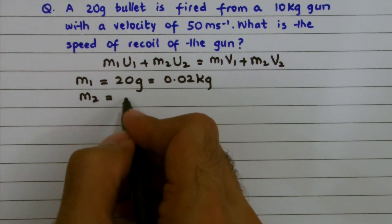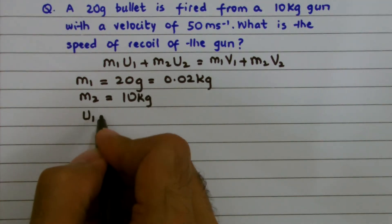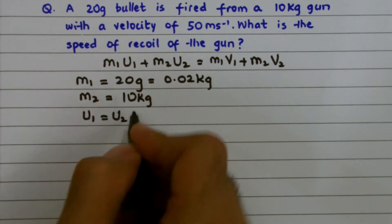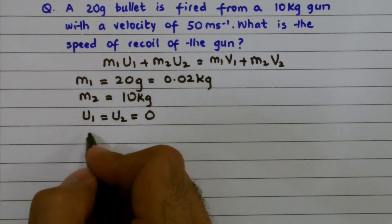M2, the mass of bullet, it's 10 kilograms. Initial velocities U1 and U2 for both bullet and gun can be considered 0 as they are initially at rest, that is before collision.